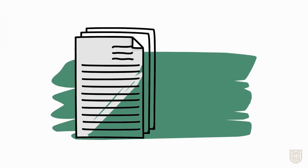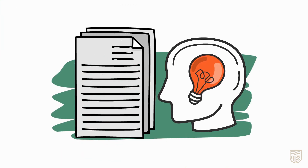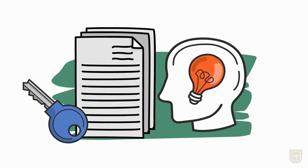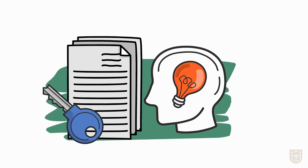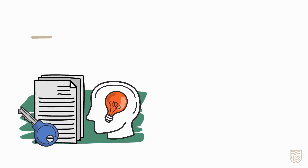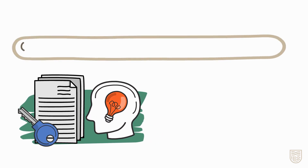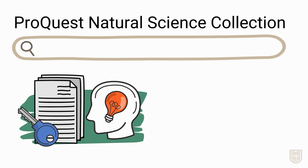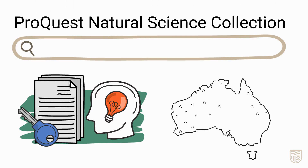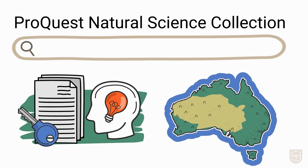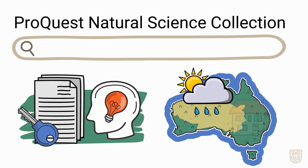After you've analysed your assessment task and made your list of keywords, you're ready to start searching. In this demonstration we'll be using ProQuest Natural Science Collection to search for journal articles for an assessment task about climate change in the Australian urban environment.